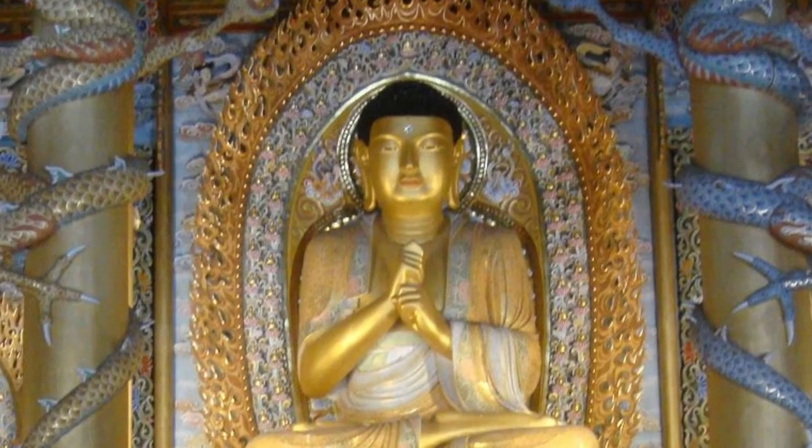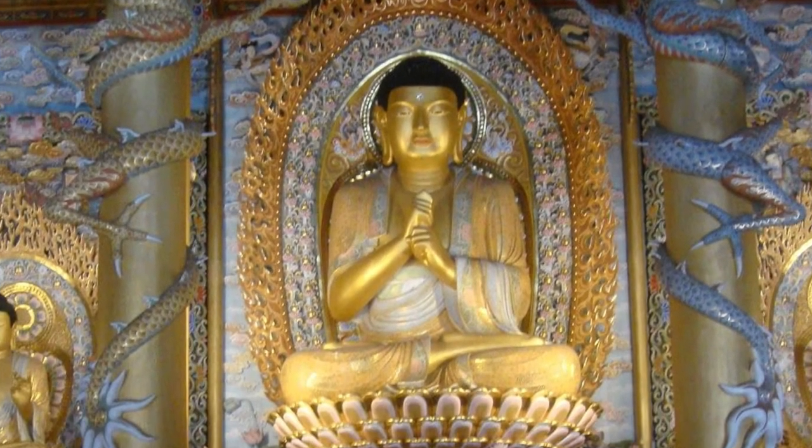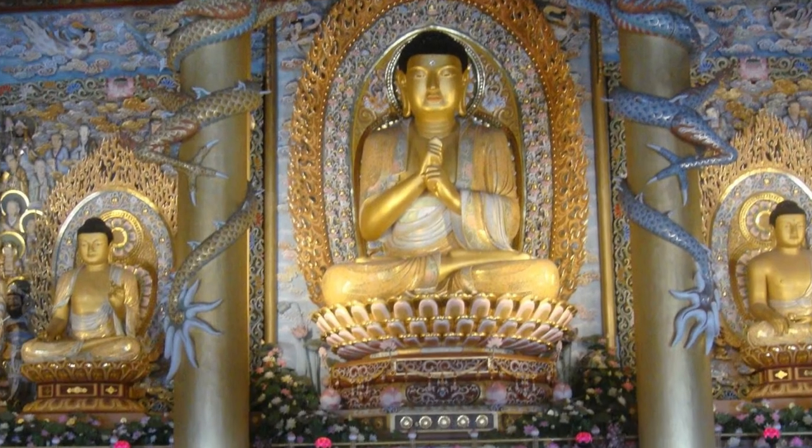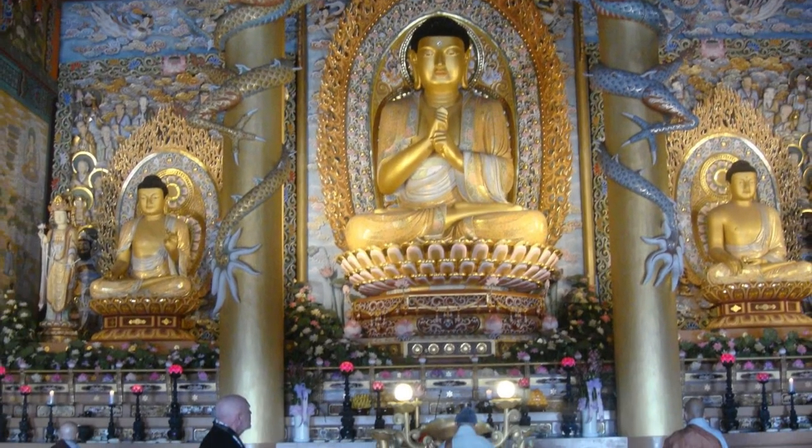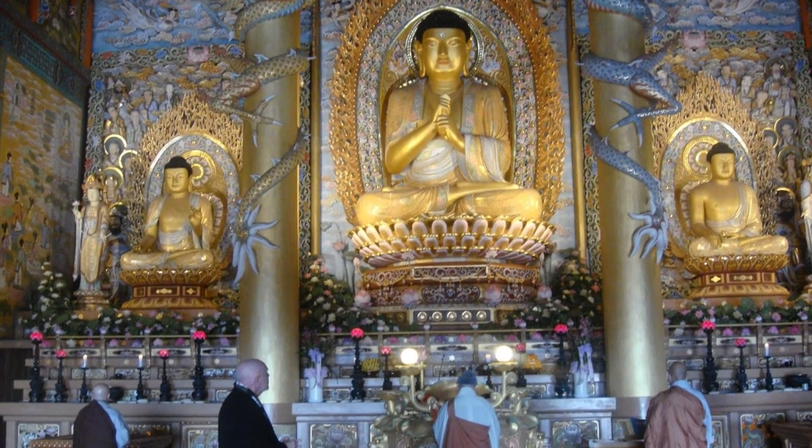Mahayana Buddhists offer prayers to the Buddha and they seek his assistance. Statues of the Buddha and temples to him that are dedicated to him are part of their devotion. They also believe in other holy men and women who have reached enlightenment like the Buddha. Buddha and these other holy people who likewise can help you spiritually on your path to nirvana are called bodhisattvas.